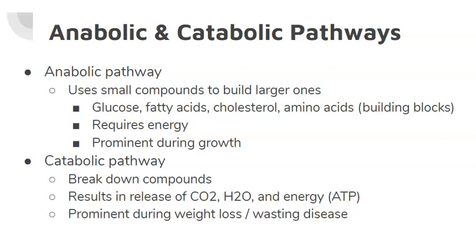Catabolic pathways break down compounds into smaller units. We have previously talked about how the storage form of glucose is called glycogen and it is found in the liver and in the muscles in your body. If we needed glucose molecules, the catabolic pathway would be used to break down glycogen to form many single units of glucose. Whenever these larger compounds are broken apart, carbon dioxide is released as well as water and energy. Catabolic pathways are used more during periods of weight loss or diseases like cancer because more tissue is being broken down than made.